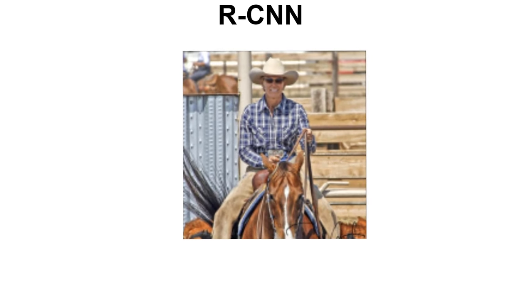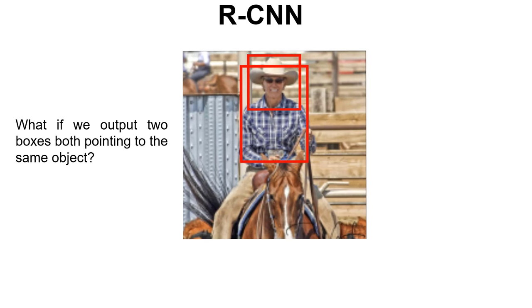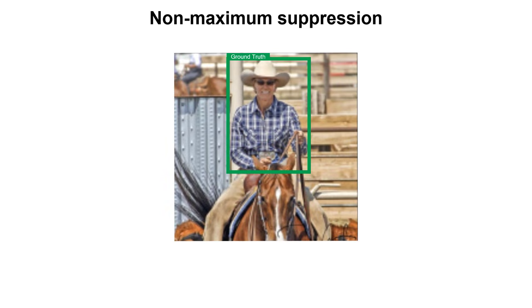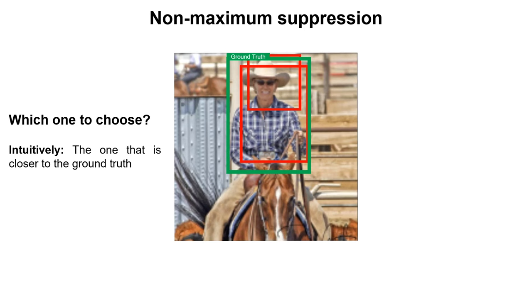Okay, we now know the general idea. But you might wonder what if we output two boxes both pointing to the same object? For solving this issue, non-maximum suppression, which is also called non-max suppression, is proposed. Note that since it's a supervised learning task, we already know what the perfect bounding box is, and we manually label it before training the model, and we call it ground truth. And imagine our model gives us these two bounding boxes, both pointing to the same person. Our question here is, which one we should choose?